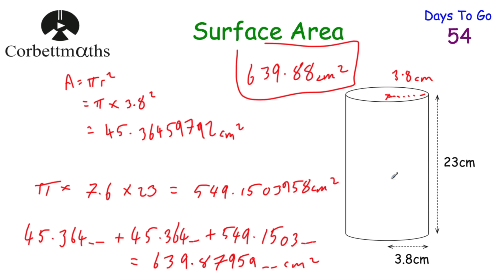The curved surface area is found by doing the circumference of the circle times the height or length of the cylinder — that gives you the area of the rectangle which folds around to become the curved surface. So you do pi r squared for each circle, then pi times the diameter times the height for the curved surface, and add them all together.